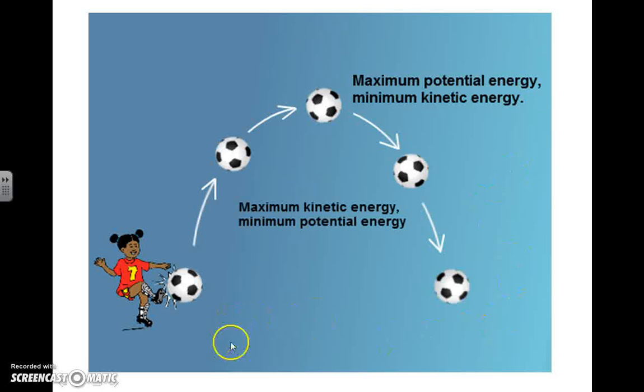This is an example of projectile motion, and this girl here has kicked the soccer ball, and this image is trying to get the point across here that since the velocity is the highest right when she kicks the ball, and also right before it strikes the ground again. The velocity being the highest is an indicator that kinetic energy is the highest there.